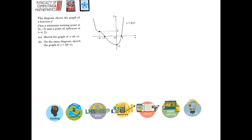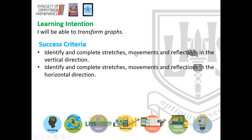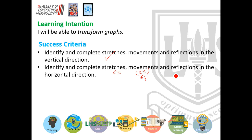Going back to what we need to know — and this is just going to take practice. Being able to identify and complete stretches, movements, and reflections in the vertical direction: a number at the front stretches it by that factor; a plus 3 moves it up 3; a negative flips it in the x-axis. We also need to identify and complete stretches, movements, and reflections in the horizontal direction: a factor of 2 inside the bracket squeezes it in by a factor of 2; a plus 3 inside the bracket means it moves to the left 3; and f of negative x is a reflection sideways in the y-axis. Go away, get the practice — that's the best way to learn this one, as ever. Thank you for your time.